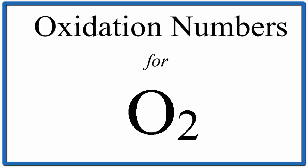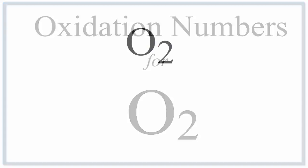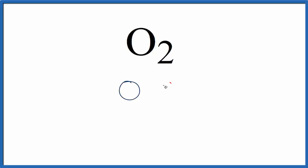When we have elements with the same electronegativity in a compound, like O2, we can consider the oxidation number, also called the oxidation state, to be zero. So simply put, the oxidation state for O2 is zero. When you're balancing redox reactions, this is really essential to remember.